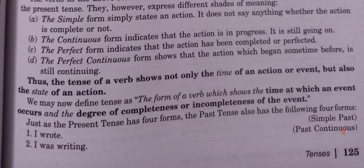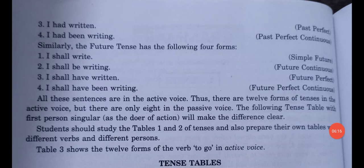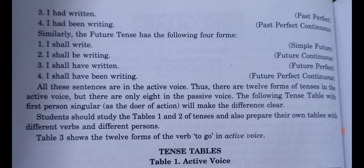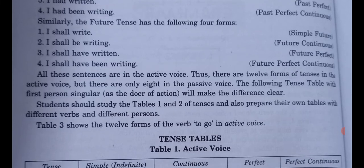Just as the present tense has four forms, the past tense also has four forms: I wrote (simple past), I was writing (past continuous), I had written (past perfect), I had been writing (past perfect continuous). Similarly the future tense has four forms: I shall write (simple future), I shall be writing (future continuous), I shall have written (future perfect), I shall have been writing (future perfect continuous).